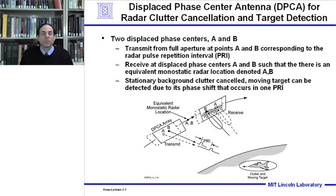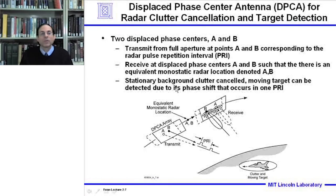In the first case, when the pulse comes back from the initial transmission at A, the aperture will have moved during the PRI. We're going to move the phase center backward toward position B, such that the position AB sees a common phase center with respect to B and A on transmit and receive. Now that we've essentially formed a fixed monostatic radar location, the moving target can be detected due to its phase shift that occurs in one PRI, whereas the stationary clutter signal can be canceled because it's not moving. That's how the DPCA clutter cancellation works.